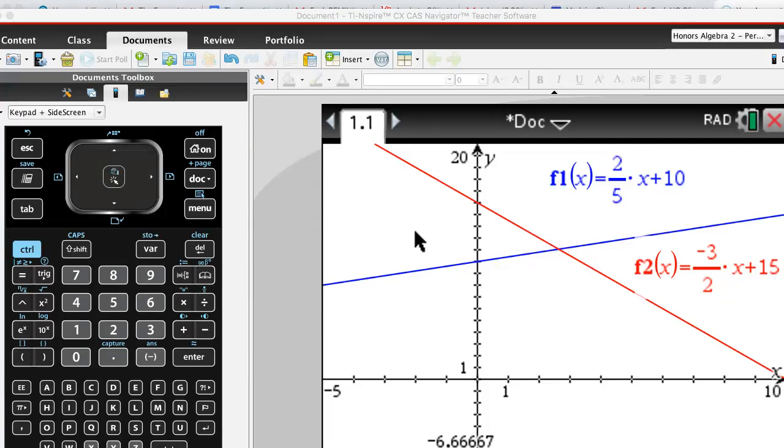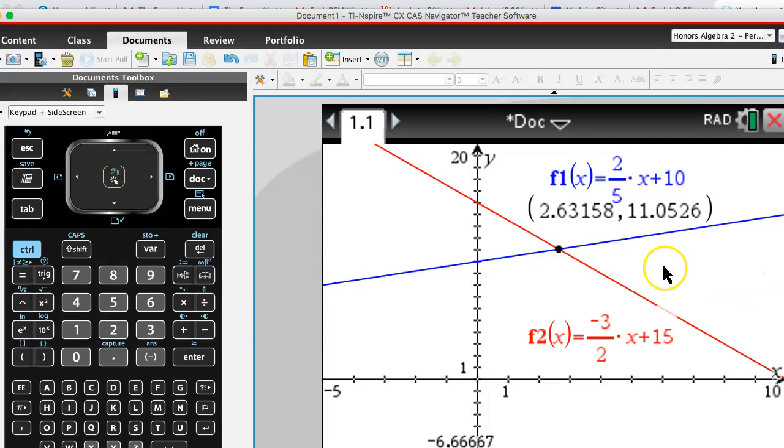Let's go ahead and find the intersection. Here is the point of intersection. Let's say I need to find the closest integer point to this point, and let's say in my portfolio, my region, part of my region, is right around in this area. I'll go ahead and move this label out.